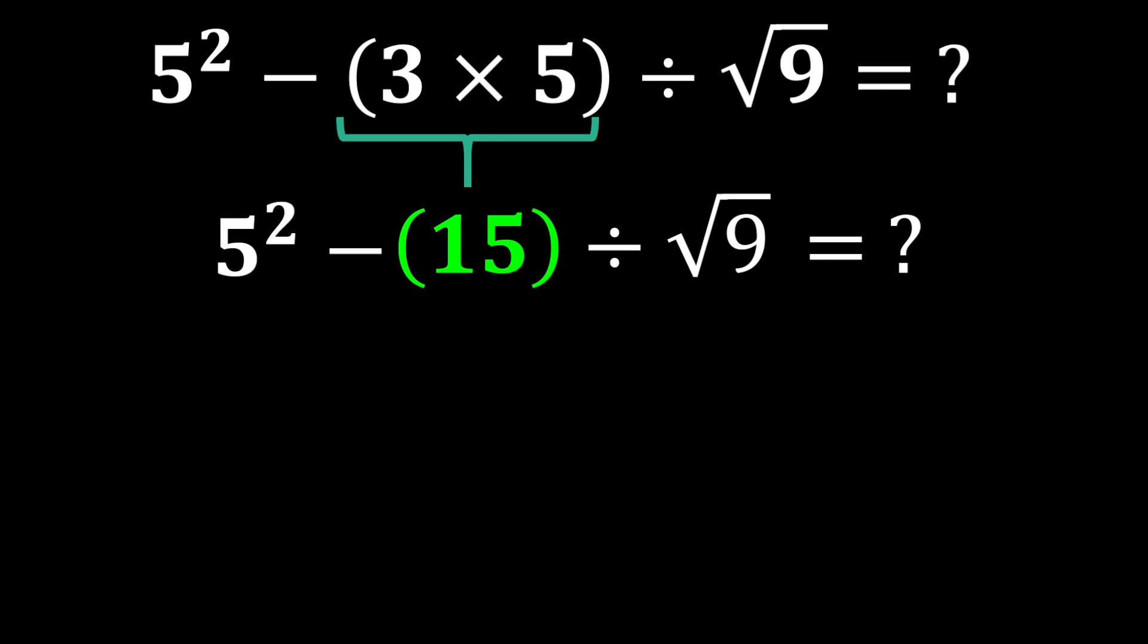Next, we calculate exponents and roots. 5 to the power of 2 is 25. The square root of 9 is 3. So the expression becomes 25 minus 15 divided by 3.